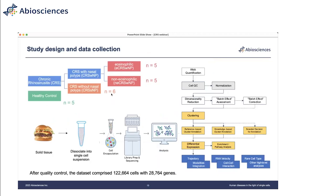In this study, we collected different samples from real patients: five samples from eosinophilic CRS, five from non-eosinophilic CRS, six from CRS without nasal polyps, and five healthy controls to offer a baseline. We took solid tissue, dissociated it into single-cell suspension, sequenced the RNA content, and prepared it for analysis. After quality control, the dataset comprised more than 100,000 cells, with each cell having more than 28,000 genes — a very profound description of each cell's transcriptome.